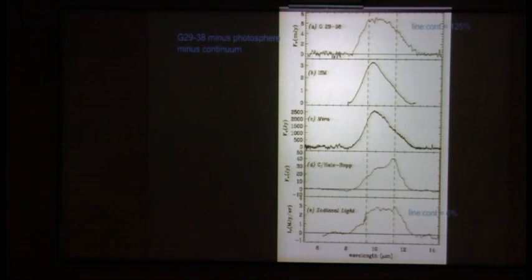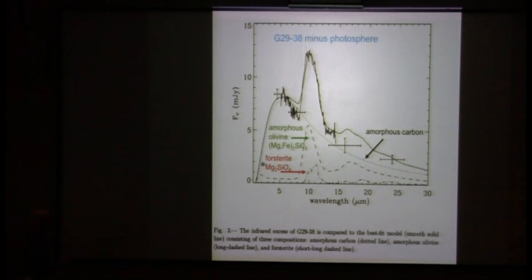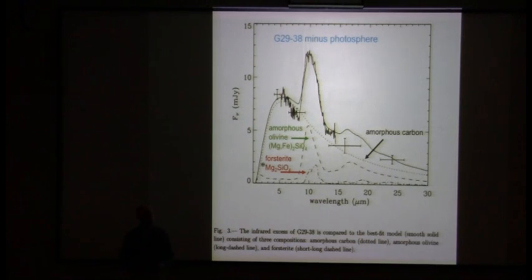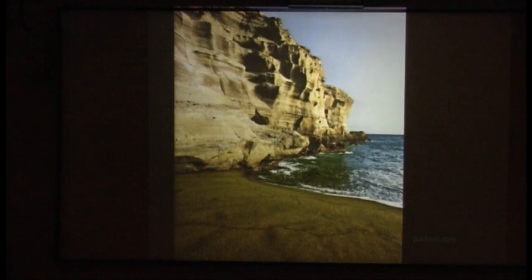Now, we did a lot more than that. This is looking at the white dwarf part has been subtracted. This is just looking at the disk as well as the peak I just showed you. And we fit models to it. And we find out that it's mostly something called amorphous olivine. Now, I'll show you a picture of some amorphous olivine. The green sand beach on the south coast of the Big Island of Hawaii.